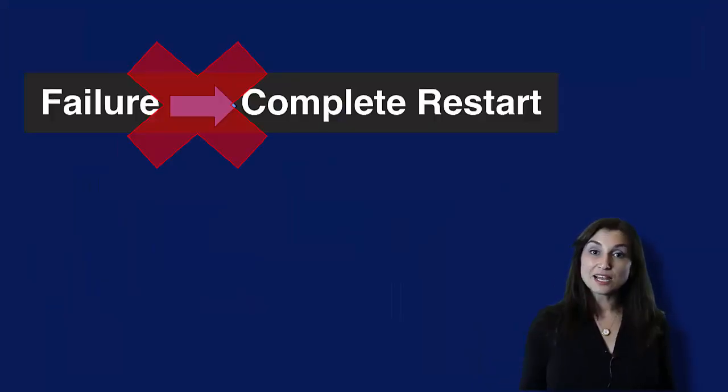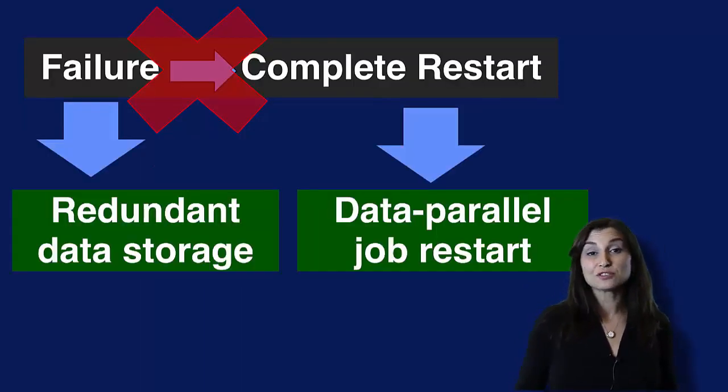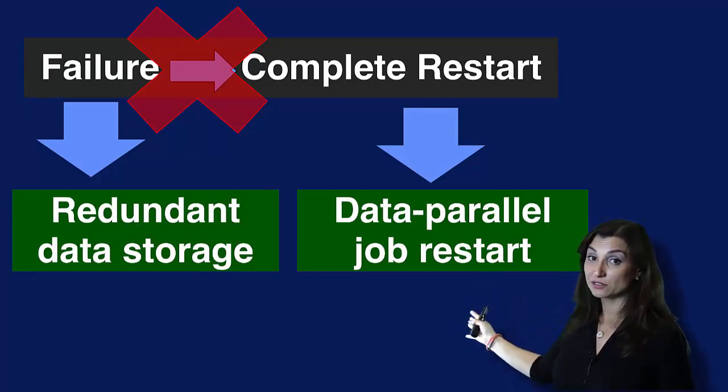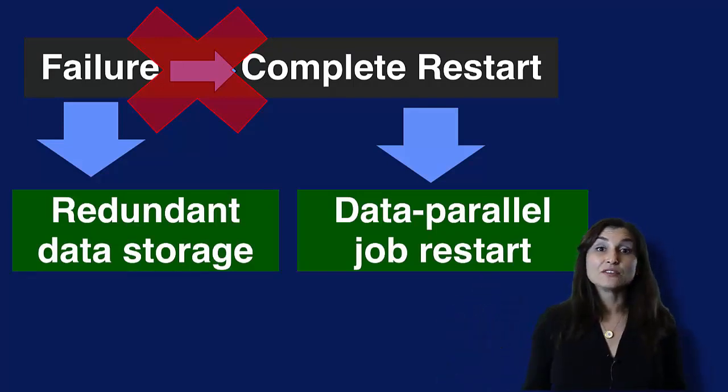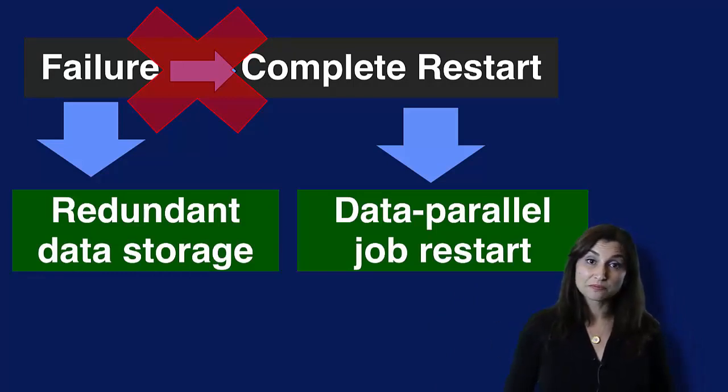It is not practical to restart everything every time a failure happens. The ability to recover from such failures is called fault tolerance. For fault tolerance of such systems, two new solutions emerged: redundant data storage and restart of failed individual parallel jobs. We will explain these two solutions next.